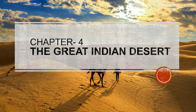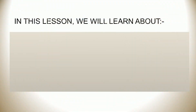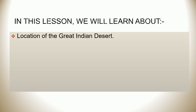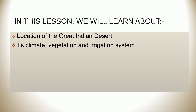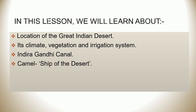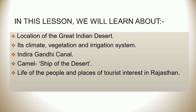Hello everyone, today we are going to start Chapter 4: The Great Indian Desert. In this lesson, we will learn about the Location of the Great Indian Desert, its Climate, Vegetation and Irrigation System, the Indira Gandhi Canal, the Camel - Ship of the Desert, Life of the People, and Places of Tourist Interest in Rajasthan.